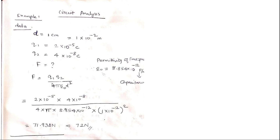Instead of K, I have written 1 by 4πε₀. This ε₀ is the permittivity of free space, which has the constant value of 8.854×10⁻¹² Farads per meter. I am substituting the values of q1, q2, 4π, ε₀, and D = 1×10⁻² the whole squared.